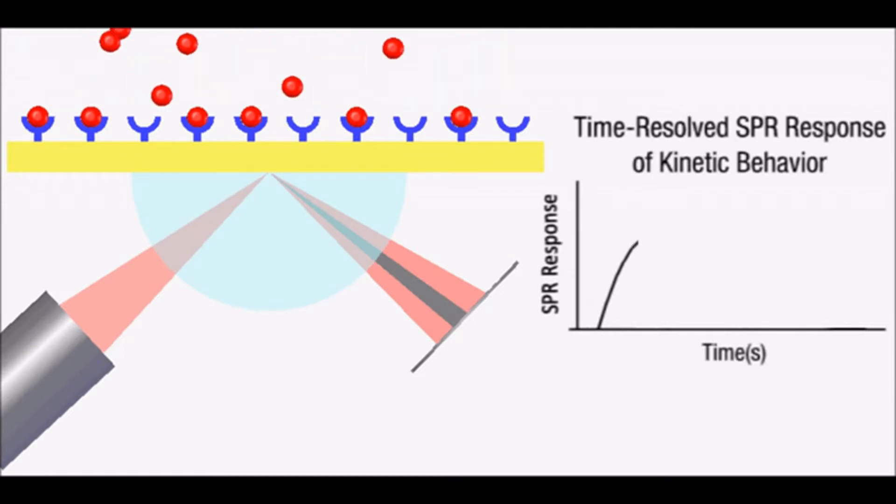As the SPR response levels off, the system approaches equilibrium and number of molecules binding and unbinding become equal.